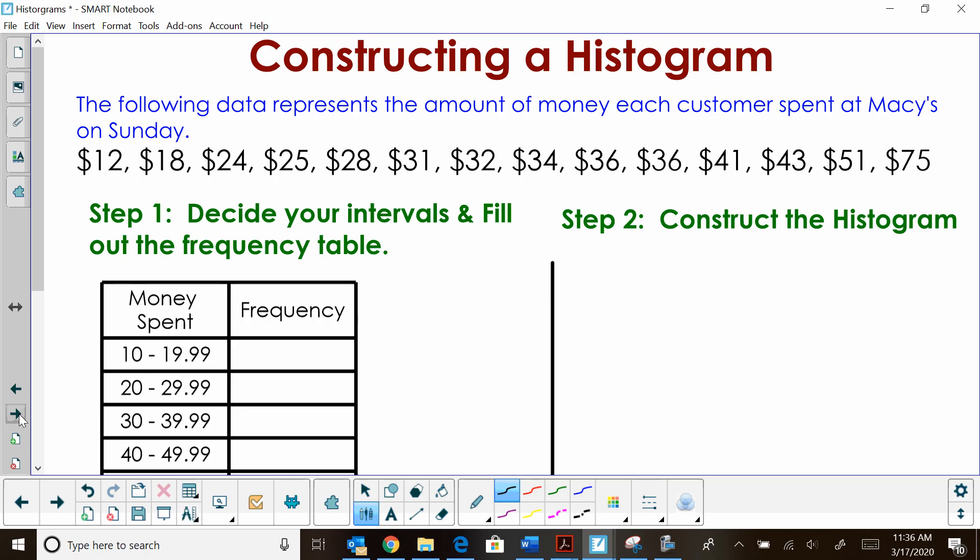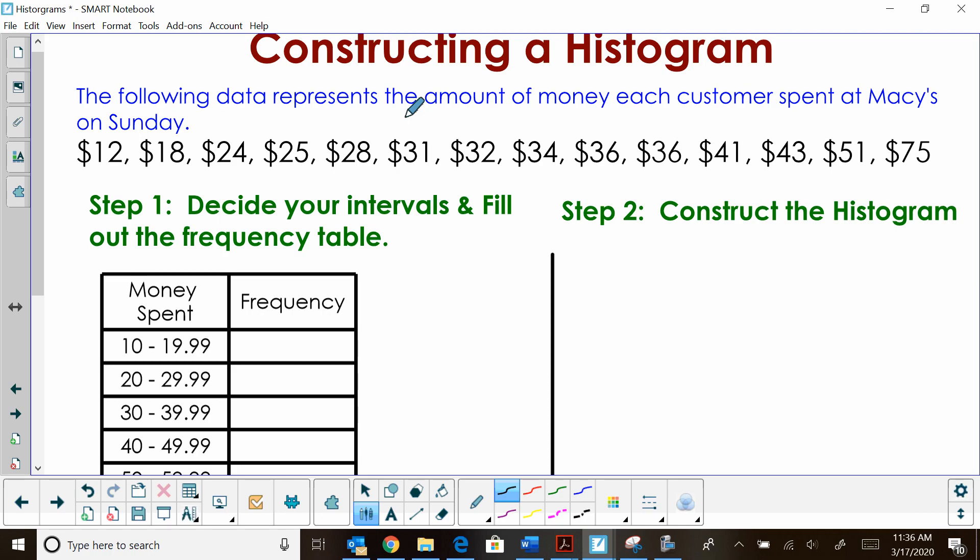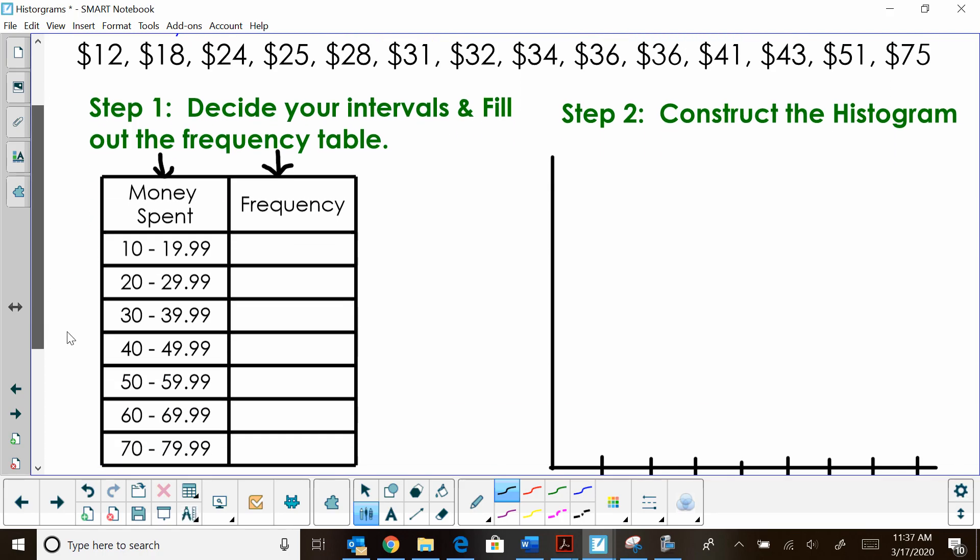Now let's say we want to construct one. Okay, we're going to be given some data, we're going to have to take that data, and we're going to have to make a frequency table out of it. And then from that frequency table, we're going to construct our histogram. So let's look at our data. The following data represents the amount of money each customer spent at Macy's on Sunday. We have 12, 18 dollars, 24, 25, 28. So we kind of have to examine this data and see what kind of intervals we want to create. Well, it makes sense to group them in groups of 10. So the money spent is going to be the left column of my frequency table. The right column is going to be my tally area where I can tally up the frequency of how much money was spent.